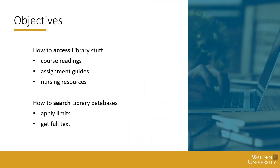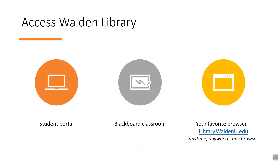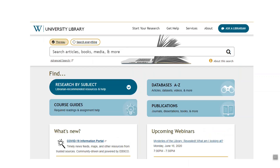We have all kinds of objectives for accessing and also searching library resources, and there are several ways to access the library. You can go through the student portal or the Blackboard classroom, but it's easiest just to go to library.waldenu.edu in your favorite browser, and this is what the library homepage looks like.